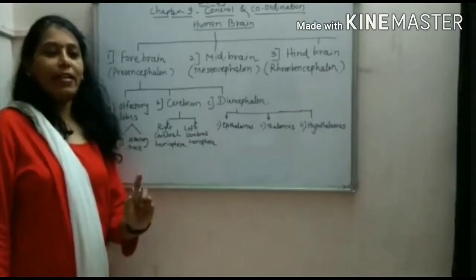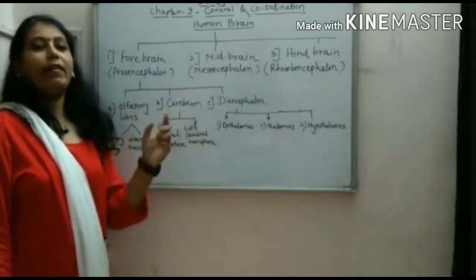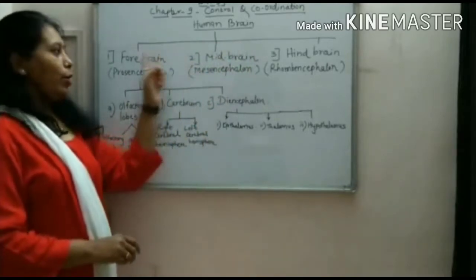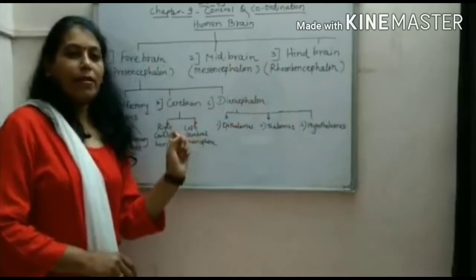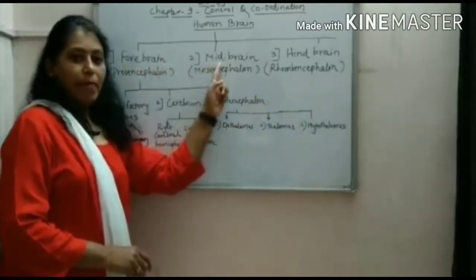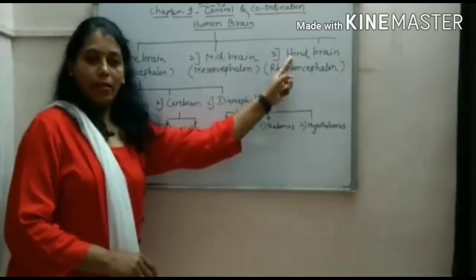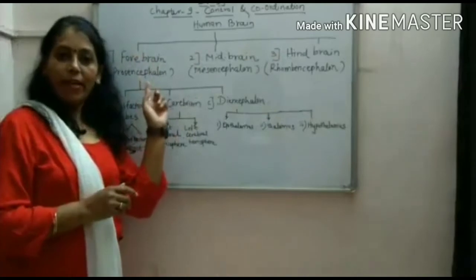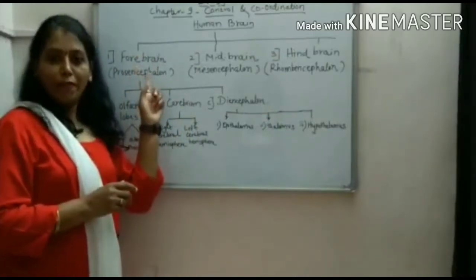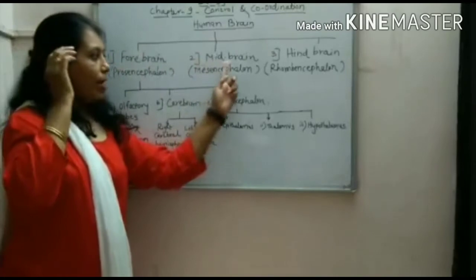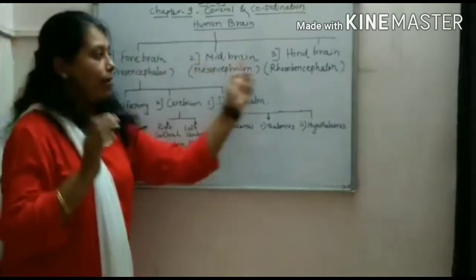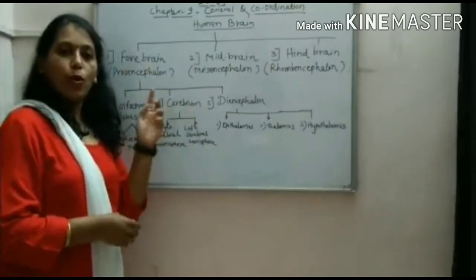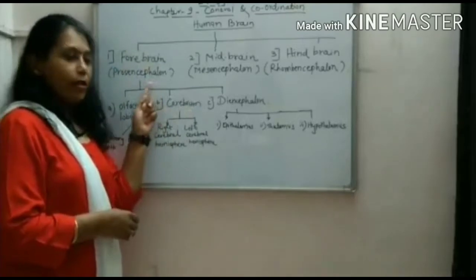Today we will study the human brain. The human brain is divided into three parts: forebrain, midbrain, and hindbrain. Fore means front, so forebrain is at the front. Midbrain is in the middle, and hindbrain is at the back. The forebrain is also called prosencephalon — 'pro' means front and 'encephalon' means brain.